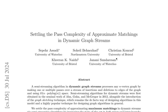This paper settles the pass complexity of approximating maximum matchings in dynamic graph streams via semistreaming algorithms. The authors present a randomized sketching-based semistreaming algorithm for O(1) approximation of maximum matching in dynamic streams using O(log log n) passes. This exponentially improves upon several O(log n) pass algorithms developed for this problem since the introduction of the dynamic graph streaming model. The algorithm is based on a model-independent reduction from matching to maximum independent set (MIS).